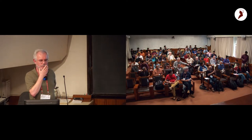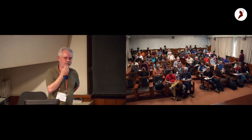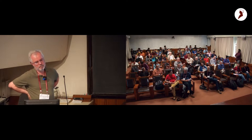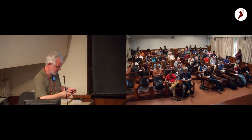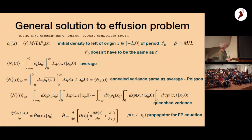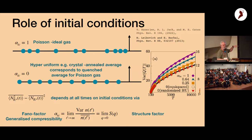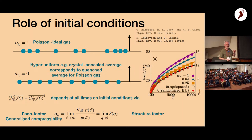Question about the √2 difference between quenched and annealed: can one manufacture initial conditions with a factor in between? Yes. This variable — the compressibility of the gas — controls it. This is the q = 0 limit of the structure factor, and in principle it can be tuned by choosing an appropriate interaction potential.